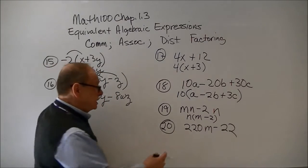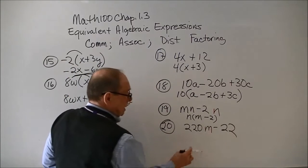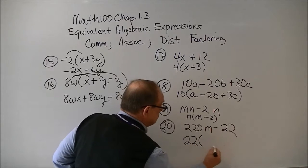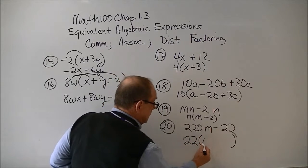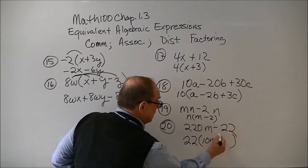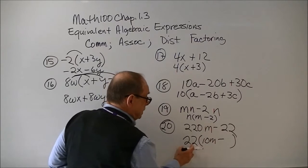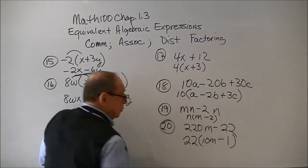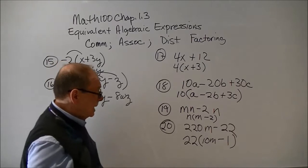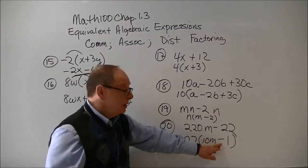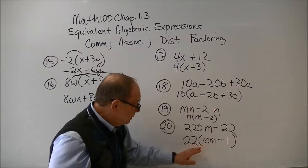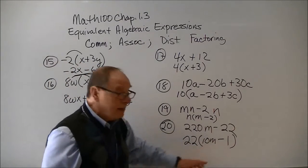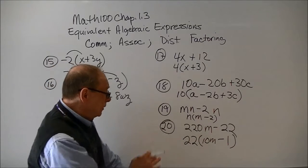And in number 20, I see a 22 there, so you can factor out a 22. And you're left with a 10m here minus, well, 22 times what is a negative 22? A negative 1. Sometimes students forget to put the 1 there. And then if they tried to distribute this, they wouldn't get that answer without the negative 1 there. That's why it's important to check things.